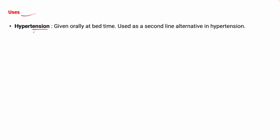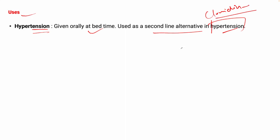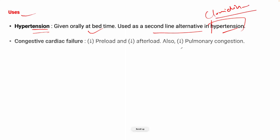Uses of prazosin: first, it is used in hypertension — given orally at bedtime — as a second-line alternative, since clonidine is the first-line agent. It is used in congestive cardiac failure (CCF) as it decreases preload and afterload, and hence decreases pulmonary congestion. CCF is associated with pulmonary congestion because the heart is not able to pump blood effectively.